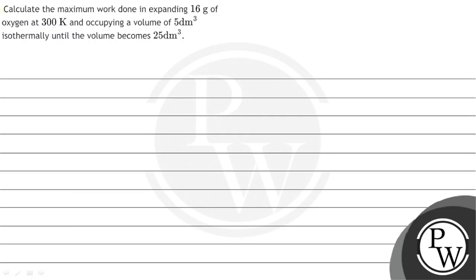Hello bachow, let's see this question. The question says, calculate the maximum work done in expanding 16 gram of oxygen at 300 kelvin and occupying a volume of 5 dm cube isothermally until the volume becomes 25 dm cube.